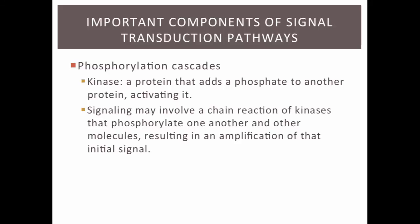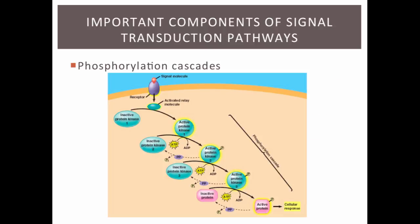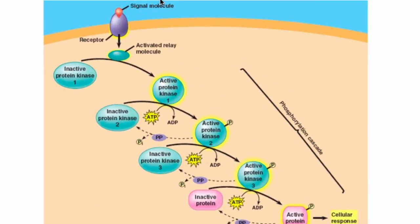Another component of some signal transduction pathways is a phosphorylation cascade. A kinase is a protein that adds a phosphate to another protein, activating it. Signaling may involve a chain reaction of kinases that phosphorylate one another and other molecules, resulting in amplification of the initial signal. One signal binds to a cell, activates a kinase, and that kinase activates a whole bunch of other things. In a phosphorylation cascade, one or two kinases are initially activated, each activating other kinases in turn, and so on — amplifying the initial signal significantly.